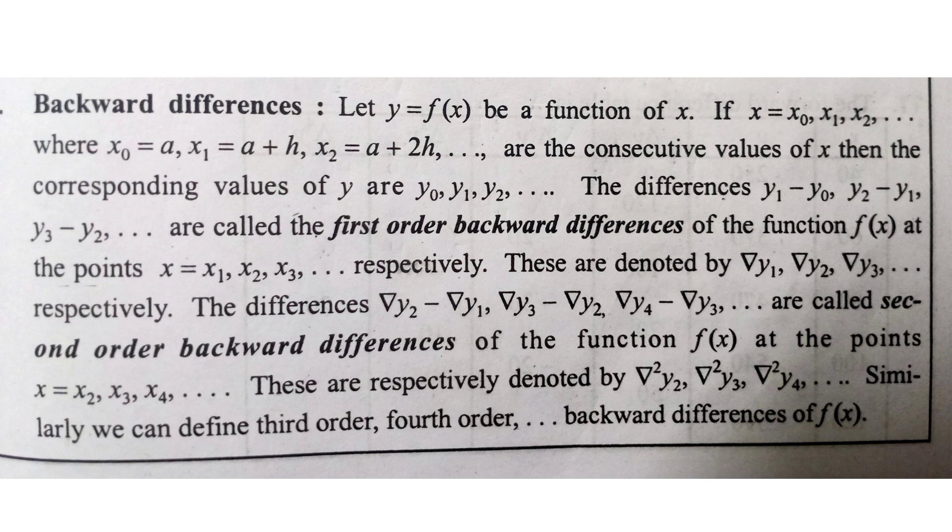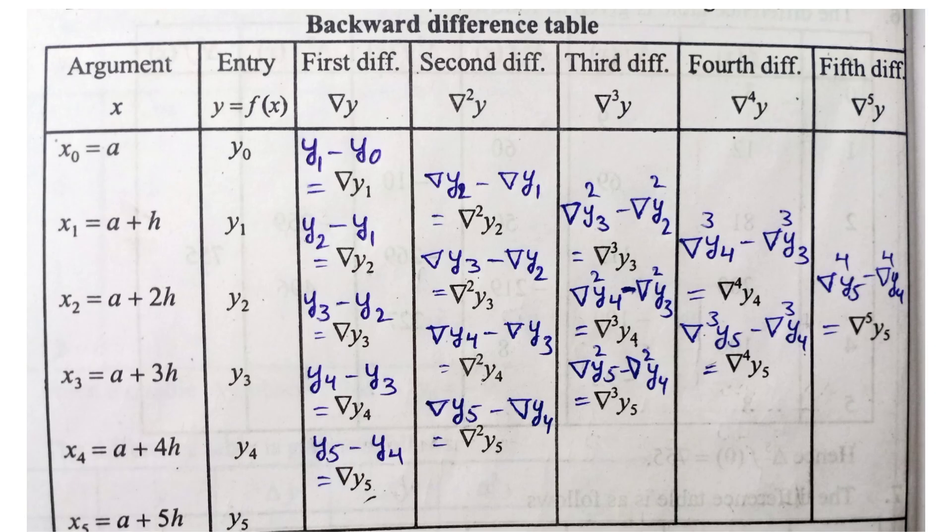The y values. First order backward difference and second order backward difference issues, table with them so that makes it easy. The table has x values as arguments and y equal to f of x values as entries. Clear, the arguments are x values and entries are y0, y1, y2, y3, y4, y5.